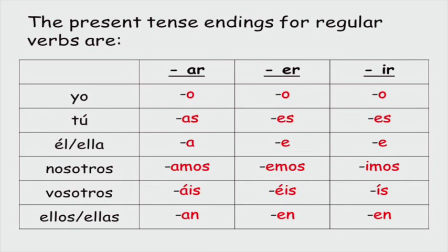You live would be VIVES. V-I-V-E-S. Now, underline ES. He or she lives is VIVE. V-I-V-E. We live is VIVIMOS. V-I-V-I-M-O-S. We live. Ye live is VIVÍS. V-I-V-I accent S. And they live is VIVEN.